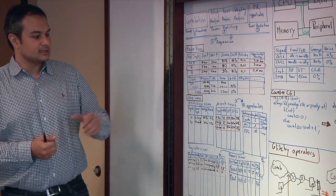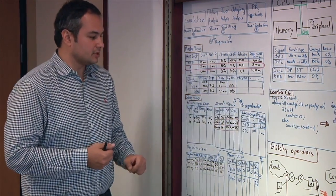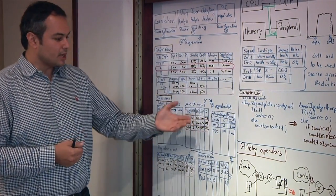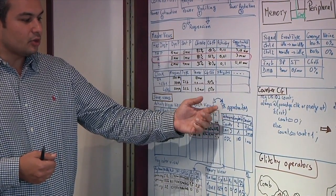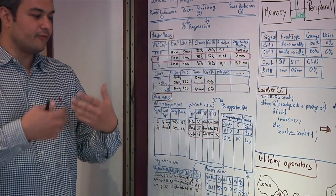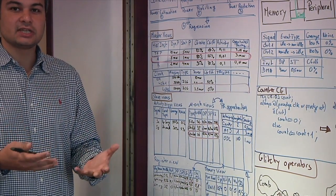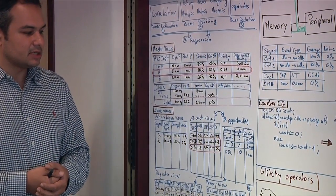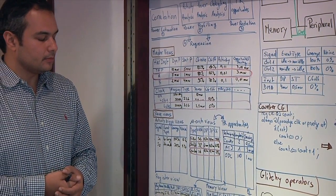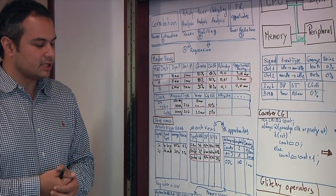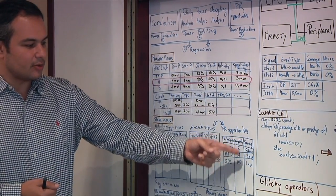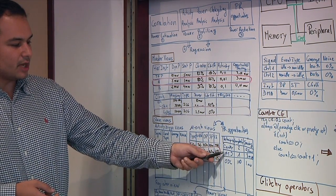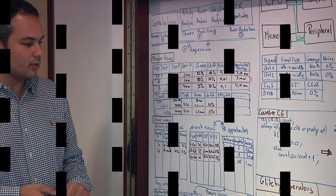Finally, the last view is the power reduction opportunities view. If you have implemented a list of techniques and run those techniques on your design, you can list all your techniques, the complexity of the change — what are all the design changes you have to do to implement that opportunity — and what power saving you can obtain with that technique. Here I have three techniques: the counter technique, what we call the activity trigger detection technique, and what we call the ODC technique.